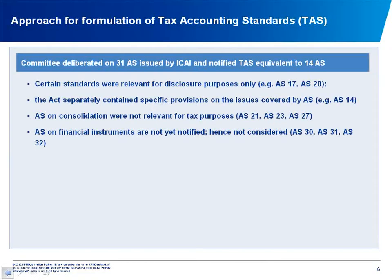The approach the committee took was to look at each individual accounting standard issued by the Institute. As you are aware, 31 accounting standards have been issued by the Institute. The committee decided to issue tax accounting standards on 14 areas out of these 31. The reason is that some accounting standards relate only to disclosures — for example, earnings per share or segment disclosure — which are not relevant from a computation of tax perspective. Similarly, areas like amalgamations and mergers have specific guidance in the Act, so no separate tax accounting standard is needed.